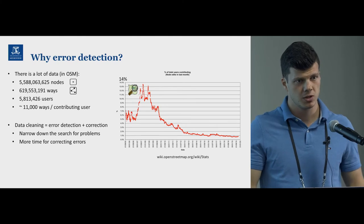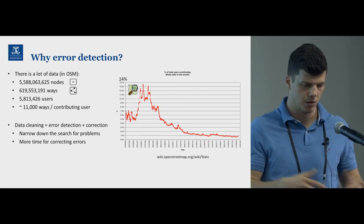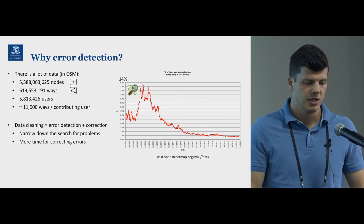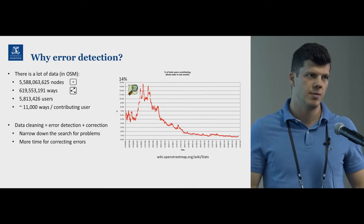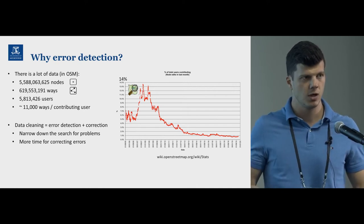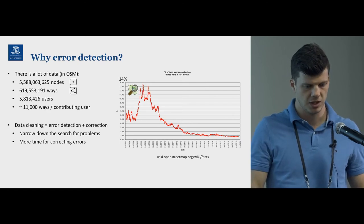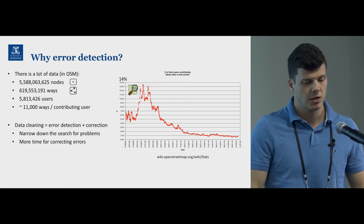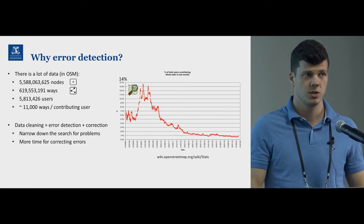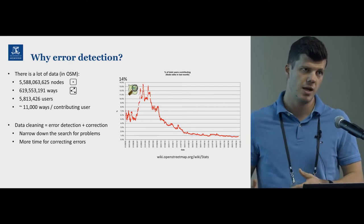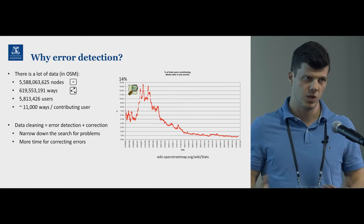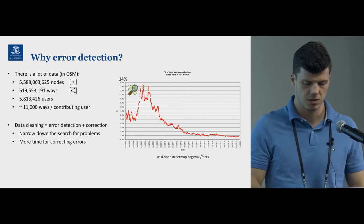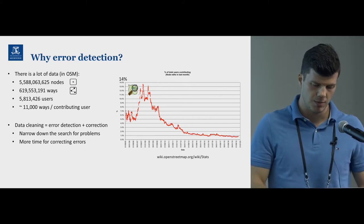If you're a contributing user mapping your area, it's hard to notice if anything is wrong in that amount of data — going through it all manually to find things that need to be updated or corrected. I would rather have people contributing to OpenStreetMap focus their time and efforts on correcting errors. If we can detect errors automatically and present them, people can use their valuable time and resources to correct those errors and make the map right.